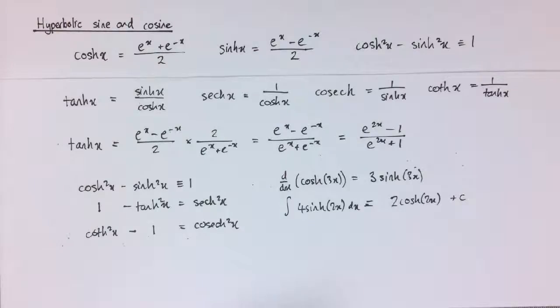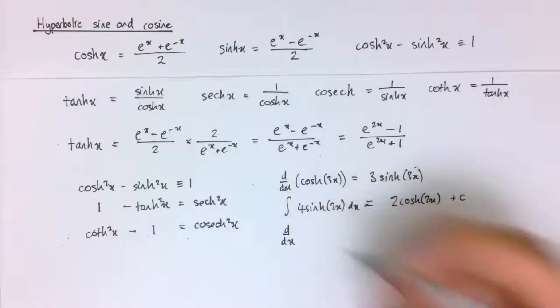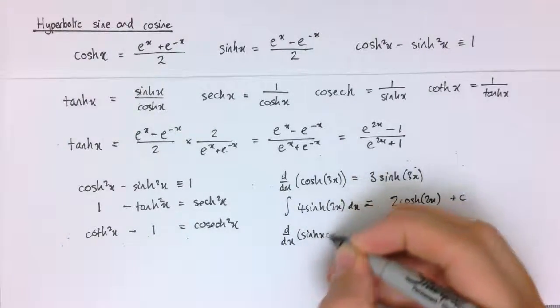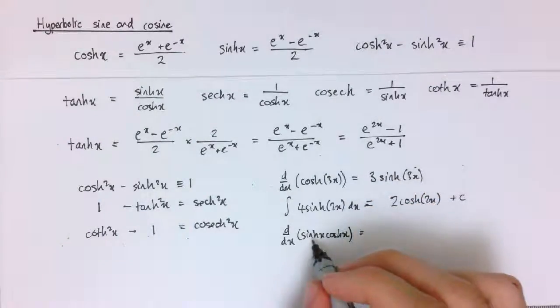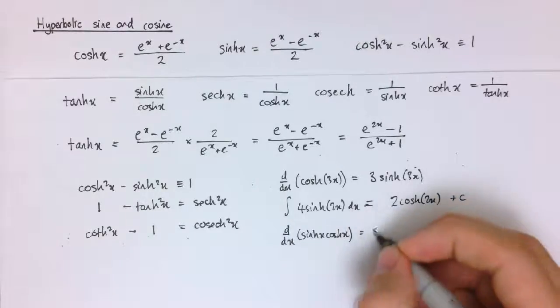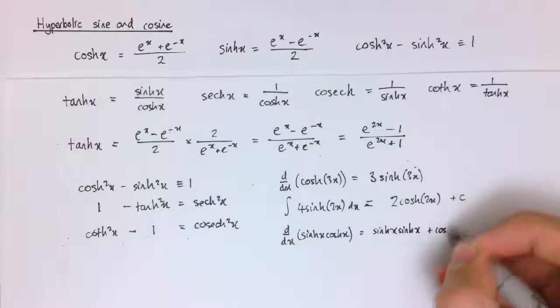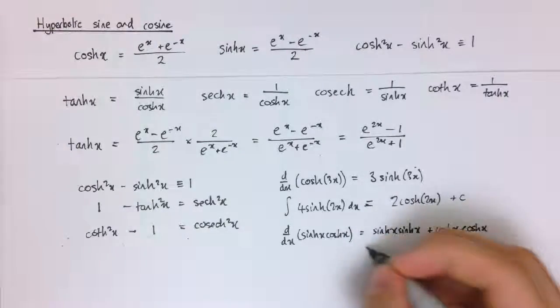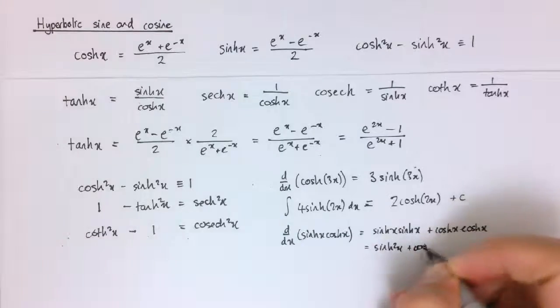And we can use the other calculus results we've got. So I could use the product rule to differentiate sinh x times cosh x. And here I would get, so I differentiate cosh and leave sinh alone. So I'd get sinh x times sinh x, and then I would do it the other way around, and get differentiated sinh x to get cosh x, and leave cosh x alone, so I'd get sinh squared x plus cosh squared x.